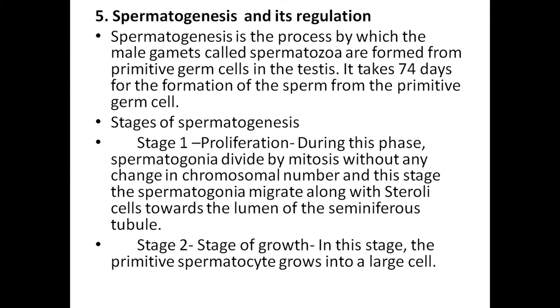Spermatogenesis and its regulation: spermatogenesis is the process by which male gametes called spermatozoa are formed from primitive germ cells in the testis. It takes 74 days for the formation of sperm from the primitive germ cells.